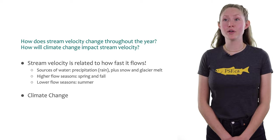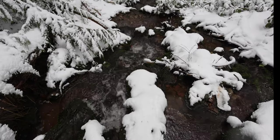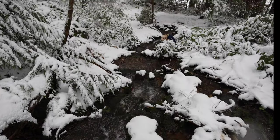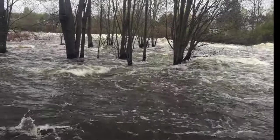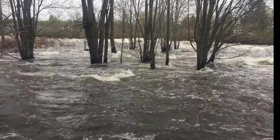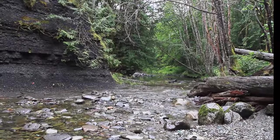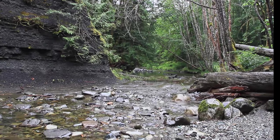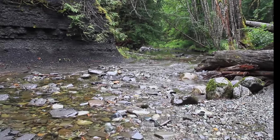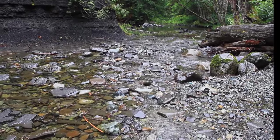Climate change has made our winters warmer and shorter, which means smaller glaciers and less snowpack. When this ice and snow melts in the springtime, rivers get a big surge of fresh water flowing through. When the glaciers get smaller, stream levels can get really low and even dry up. Less precipitation in the summer causes low flow periods as well.